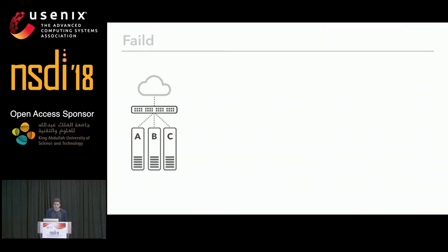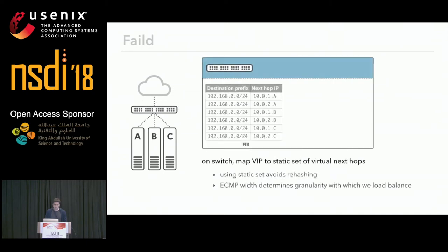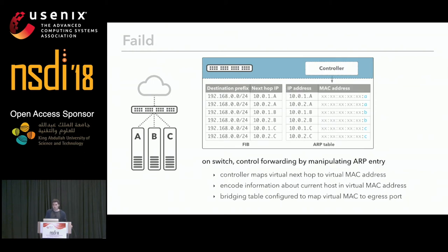The solution we came up with is called FAIL-D and it's conceptually simple. In a switch you program the routing table to map a VIP to a static set of virtual next hops — completely made-up IPs. Using a static set of virtual next hops means the routing table is fixed, so you don't incur ECMP rehashing when you change it. A controller on the switch, instead of manipulating the routing table, manipulates the MAC address. For each virtual next hop, you map to a virtual MAC address that encodes the target host within the POP in the address itself.